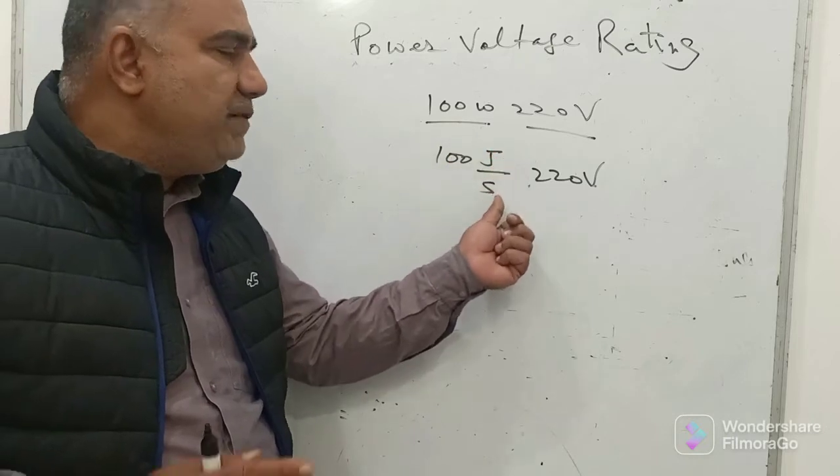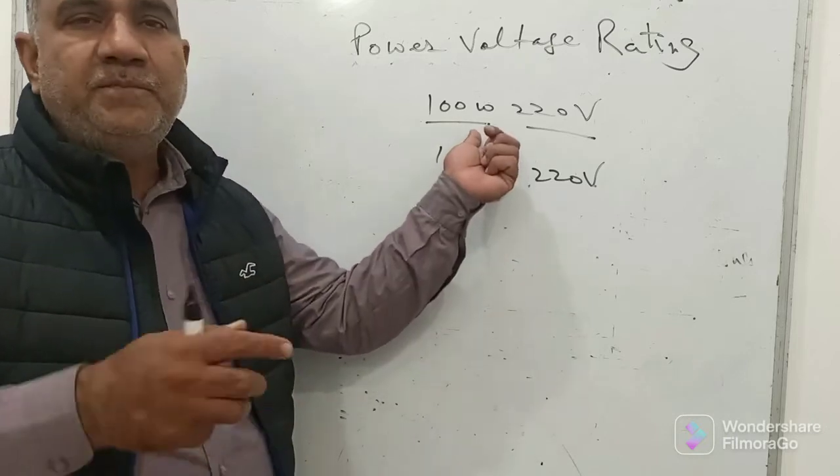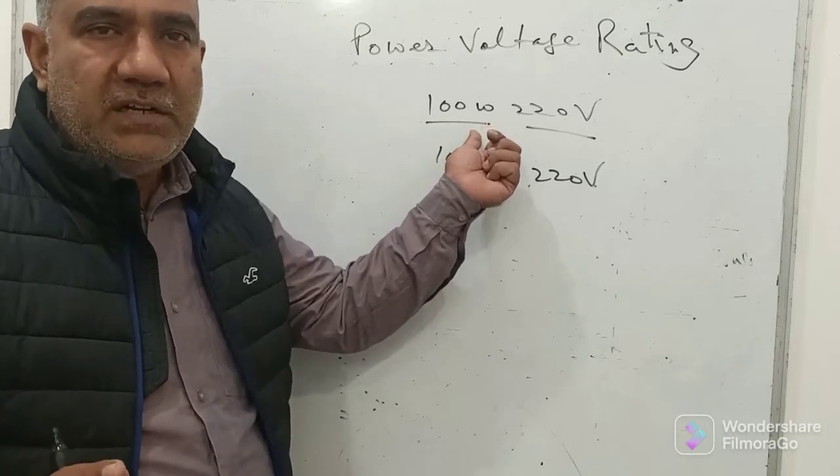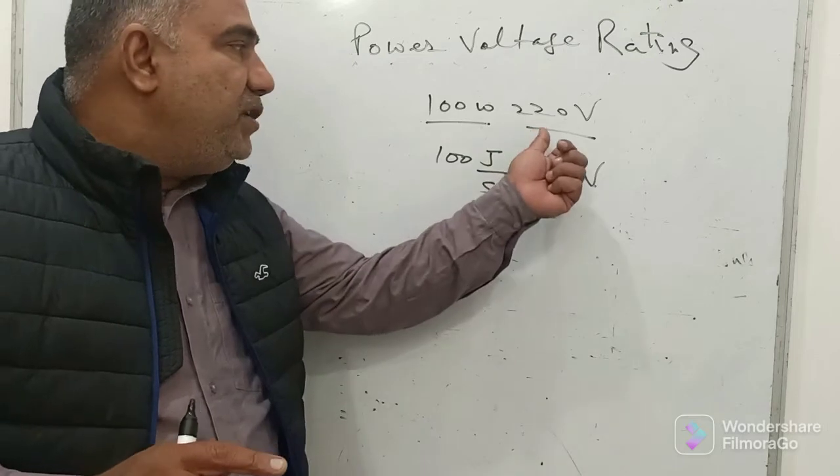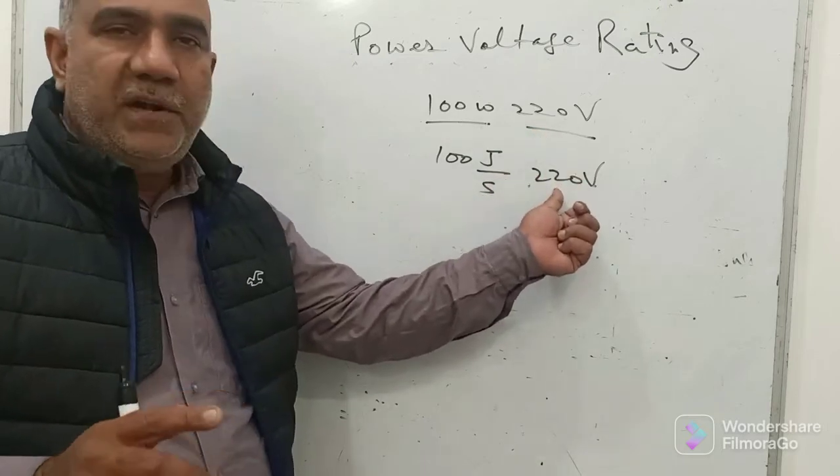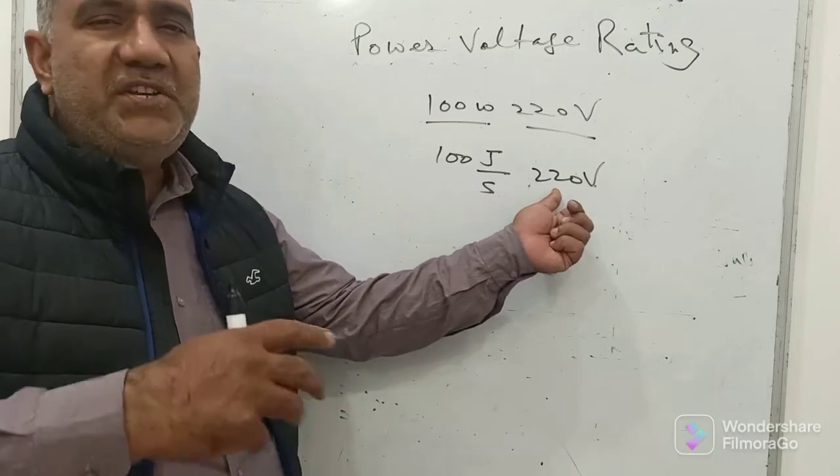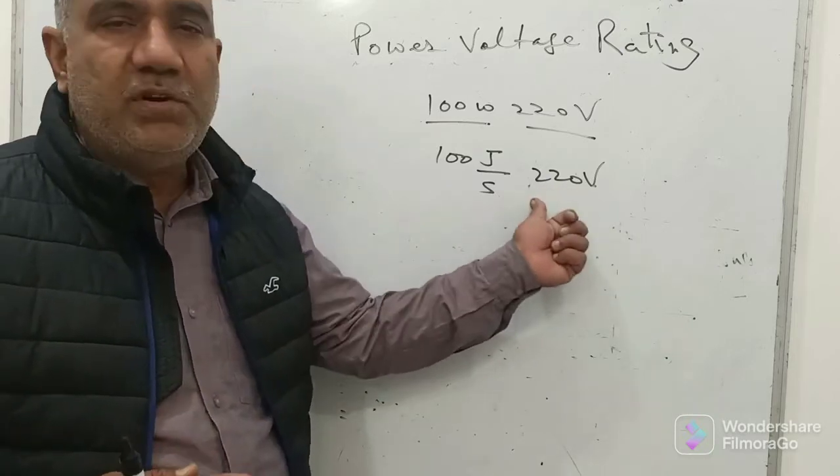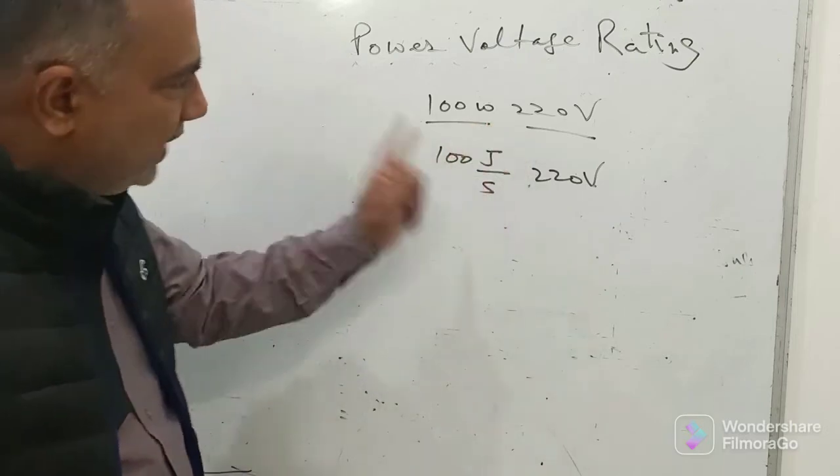100 watt means 100 joule of energy. If a device is consuming 100 joule of energy in one second, we say its power input is 100 watt. And you need to mention that when it is operated at 220 volt. I will make it amply clear why we should mention 220 volt - why just saying 100 watt is not sufficient. Because the same bulb will consume different energy when operated at different volts.